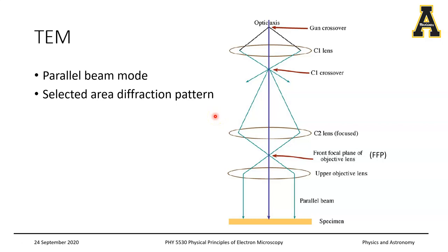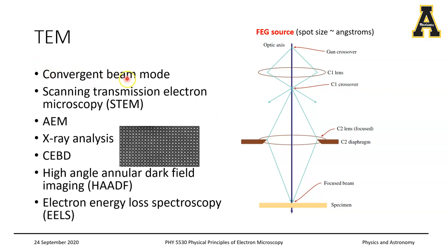The convergent beam mode is quite commonly used as well, and it is used especially in scanning transmission electron microscopy, which is a combination of the SEM and TEM techniques. There are several advantages to this — it is really a powerful technique. If you have a FEG source, which is a field emission gun, then you do not need too many lenses to get the focus and the probe spot that you want.